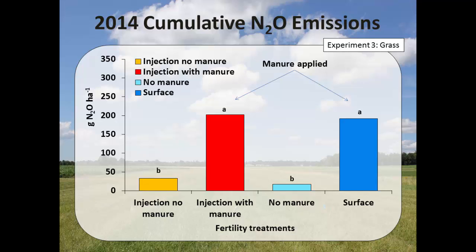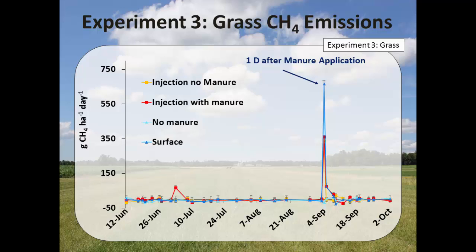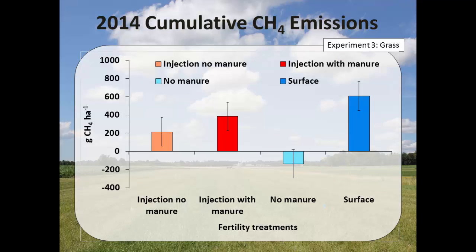For methane emissions during the grass growing season, this is what we missed in alfalfa and corn — we did not sample exactly the day of manure application. We missed that day, and you see nothing after that. This year we went right after application in corn and saw a huge peak of methane immediately following manure application. Looking at cumulative methane emissions, we now have methane emissions rather than uptake because of that missed peak. The only treatment showing methane uptake was the no-manure application control.